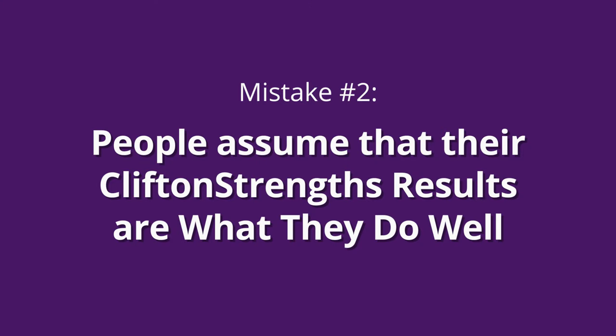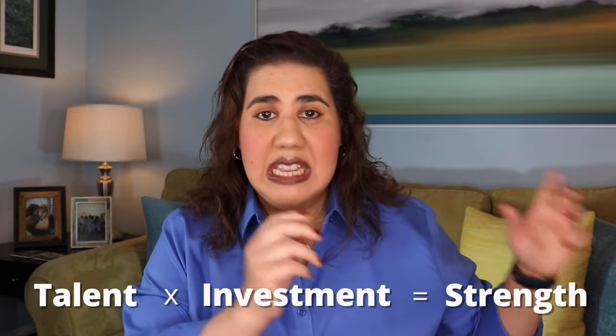Mistake number two: people assume that their CliftonStrengths results are what they do well. Your CliftonStrengths results are your talent themes — your naturally recurring patterns of thinking, feeling, and behaving that could be productively applied. In other words, they're the patterns that come naturally and easily to you, and it's where you have the greatest potential. But potential isn't enough. You have to develop your talents into strengths. Gallup has a formula: talent times investment equals strength.